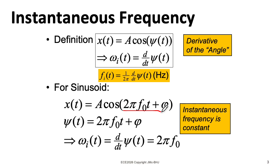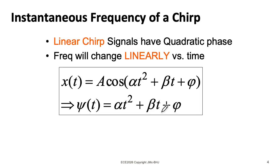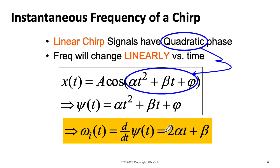So this definition matches our intuitive understanding of what the frequency in radians per second should be. This is a linear function of time. What if we have a quadratic function of time? So if we take the derivative of psi, we get 2 alpha t plus beta.